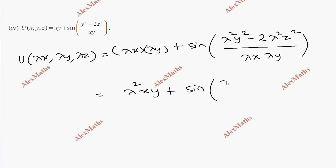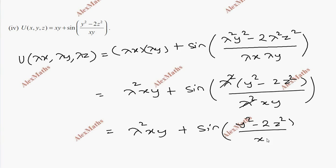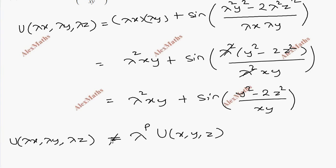In the numerator, lambda squared is common — y squared minus 2z squared times xy. In the denominator, lambda squared cancels out with lambda squared xy. But the second term's lambda does not cancel, so this cannot be expressed in the form lambda to the power p times u of x, y, z. Therefore, that function is not homogeneous.